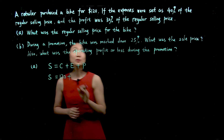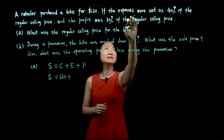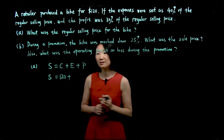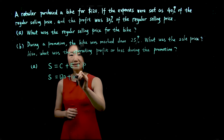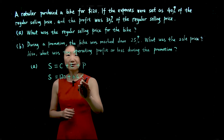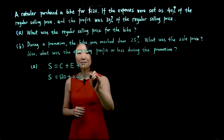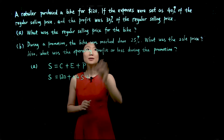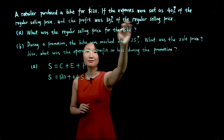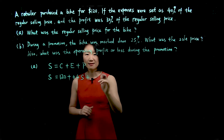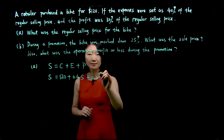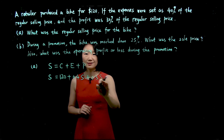Expenses we don't know, but we know expenses were set as 40% of the regular selling price. 40% is 0.4, so expenses equal 0.4 times regular selling price. The profit is also unknown, but we know it's 30% of the regular selling price — 30% written as 0.3, so profit equals 0.3 times selling price.